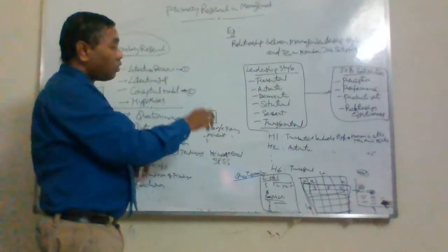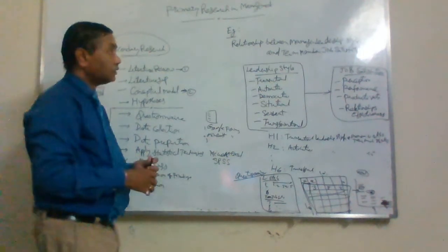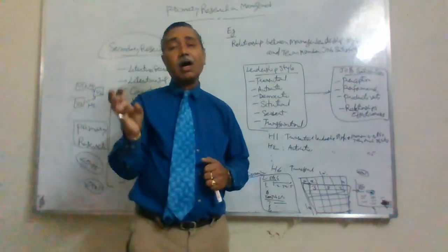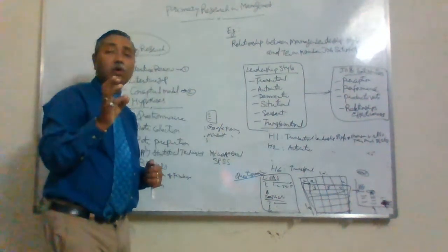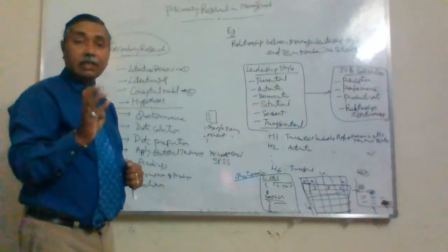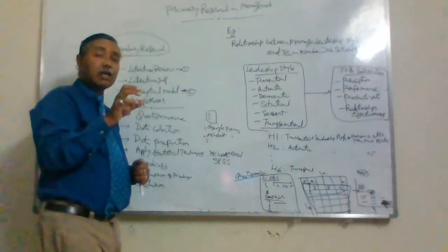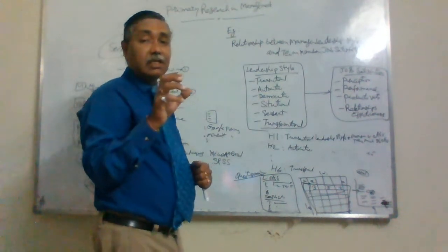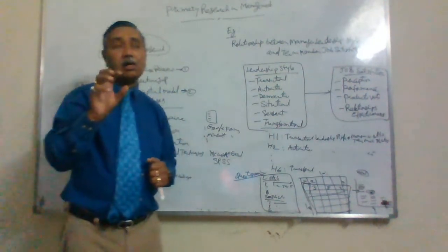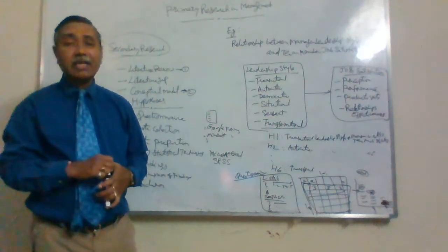This is how you do primary research. As discussed, primary research data can be collected using a survey questionnaire, interviews, or observation. Observation is useful for developing a case study. I will tell you about one study I conducted where I collected qualitative data.